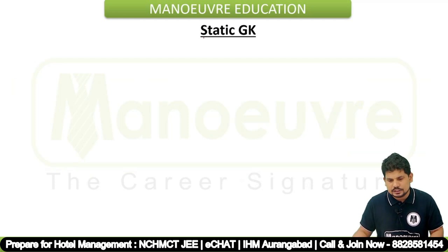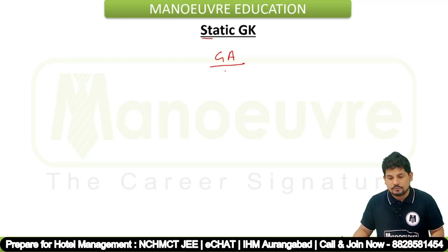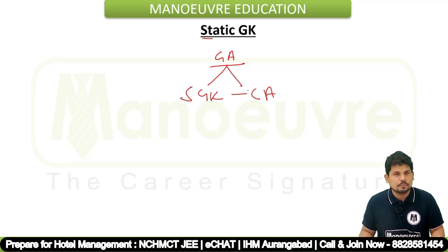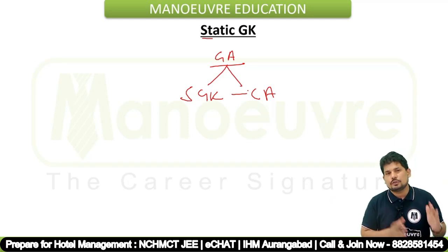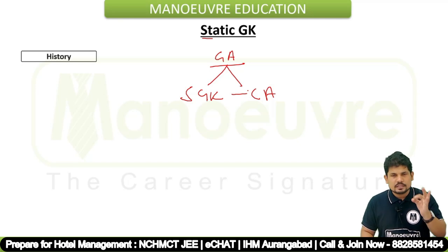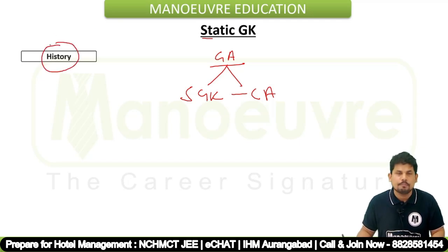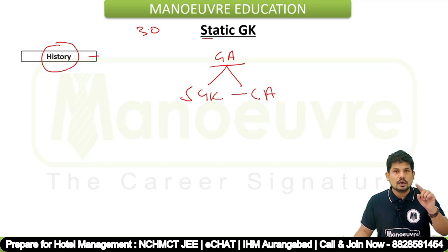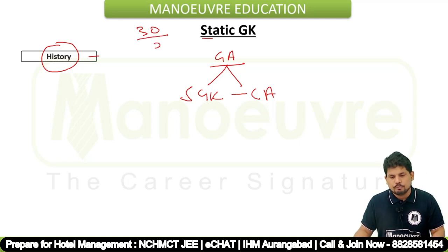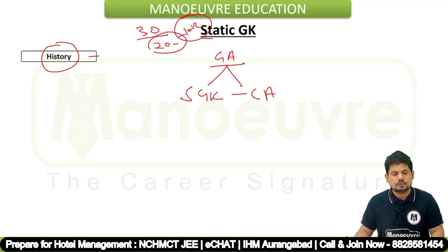Now coming to the important part — static GK. The general awareness section is divided into two parts: first is static GK, and second is current affairs. Current affairs includes important personalities, sports section, important appointments, and obituary section. Static GK includes history, geography, polity, and science-oriented GK. Based on the importance and weightage, out of thirty questions, more than twenty questions come from static-oriented topics and ten to twelve questions from current affairs. So static GK has higher importance.